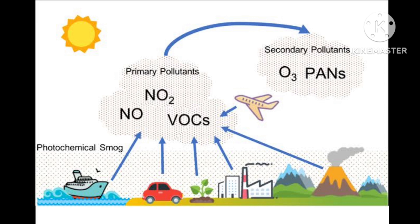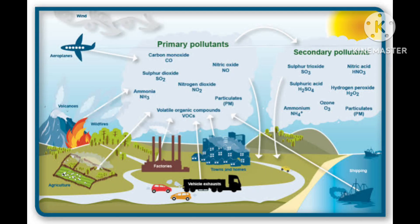The ClONO₂ reacts with water vapor (H₂O) to form hypochlorous acid (HOCl) and nitric acid (HNO₃). Also, ClONO₂ reacts with HCl to form molecular chlorine gas (Cl₂). This Cl₂ then breaks down into two Cl• radicals under sunlight.